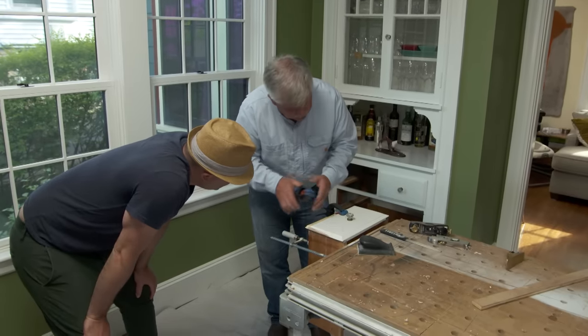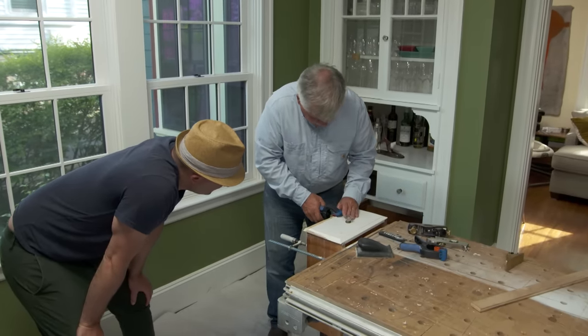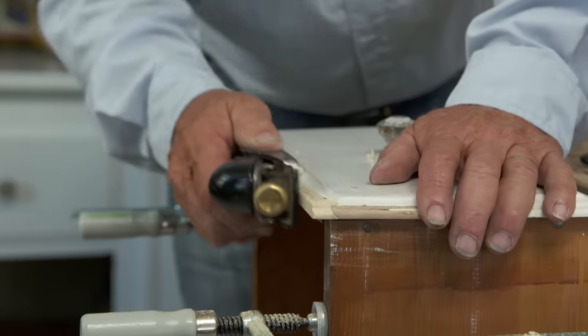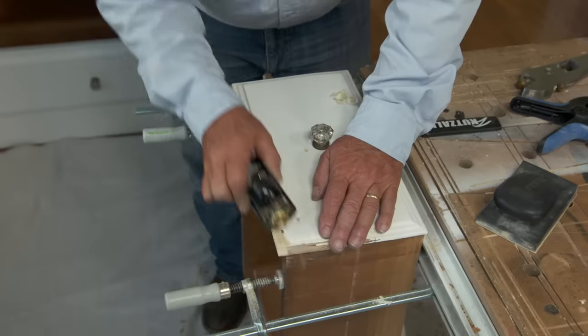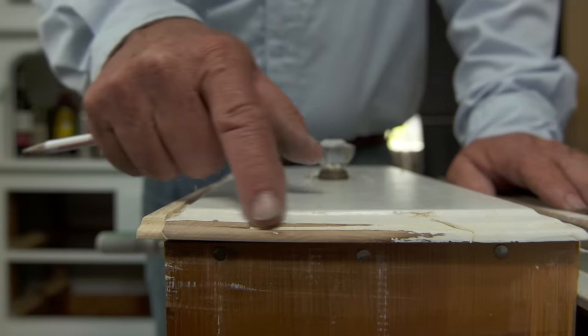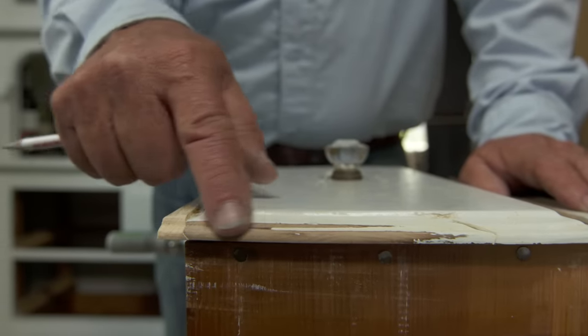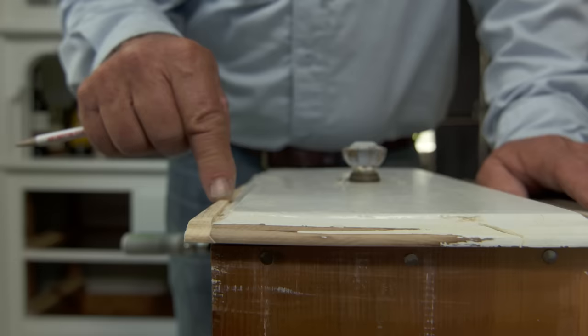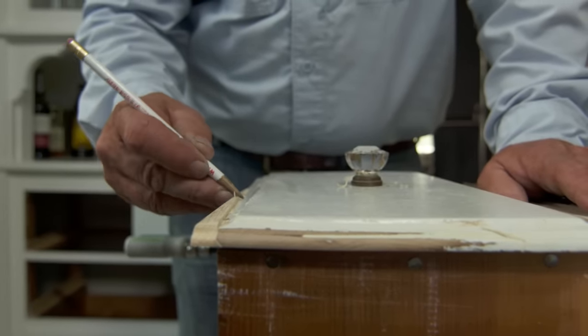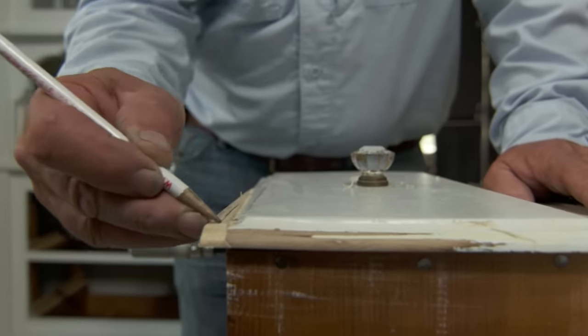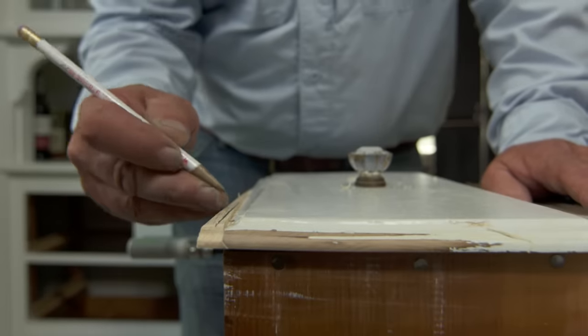Now we'll take the clamps off, see if we can fine-tune this one. So now I want to match this profile right here and return it down across the top. To do that I'm going to have to draw a reference line. I know where I want to stop it, which is going to be right there. So now I want to remove this material here.